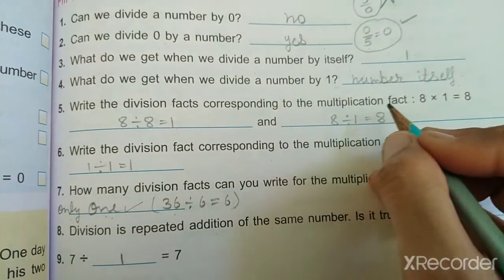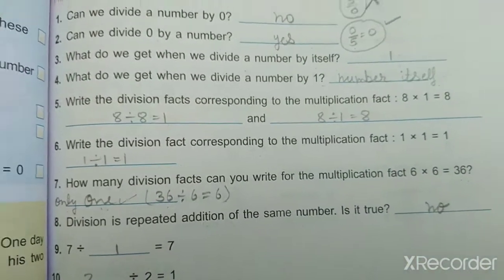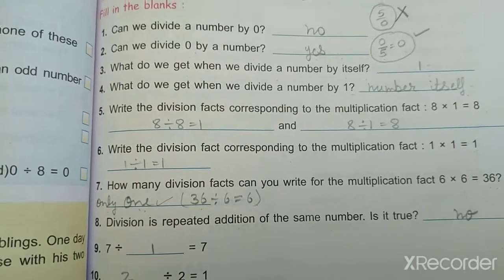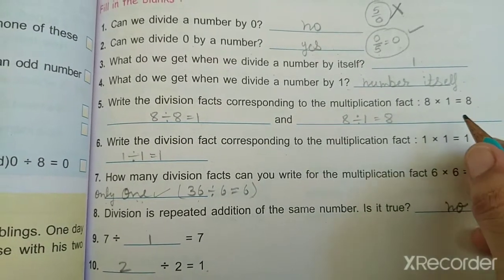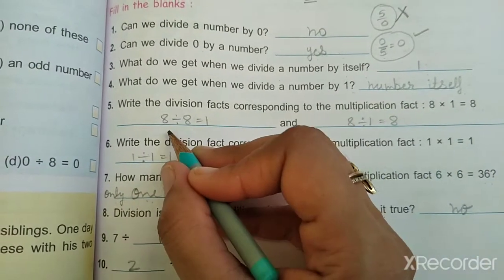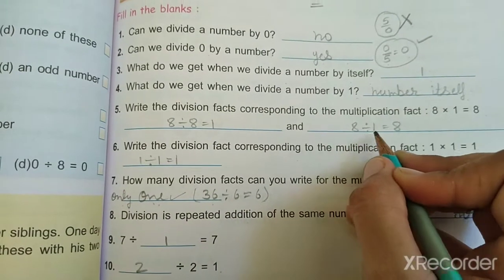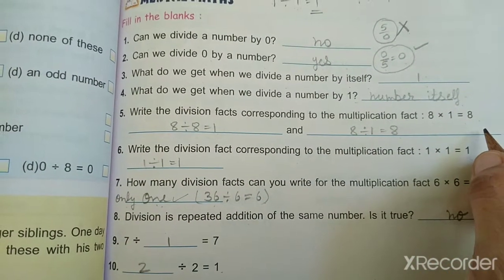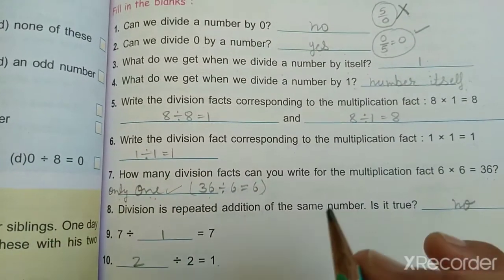Write the division fact corresponding to the multiplication fact: 8 multiplied by 1 is equal to 8. So clearly, the division fact: 8 divided by 8 is 1, and 8 divided by 1 is 8. We have done division multiplication facts previously. You can see in the previous exercise.